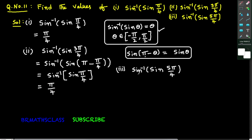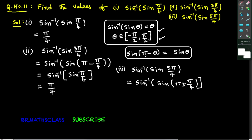Now we will see the third bit. Sin inverse of sin 5π/4. It is of the form sin inverse of sin θ. Can we write sin inverse of sin 5π/4 = 5π/4? 5π/4 is 225 degrees. Is 225 degrees in between −90 and +90? No. So we cannot write that. We follow the same method as the second bit. For 5π/4, I write π + π/4. If you write plus: π/4 + π = 5π/4. So plus is suitable here.